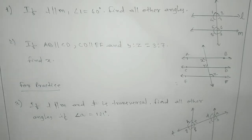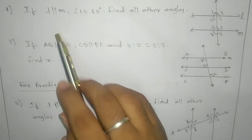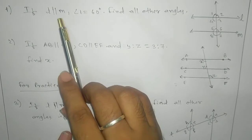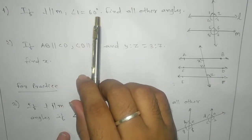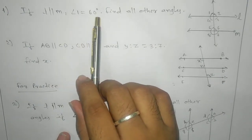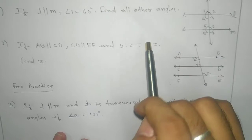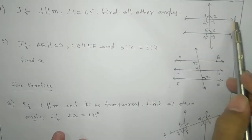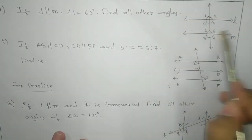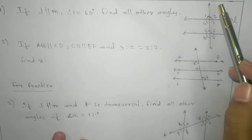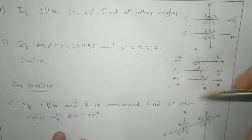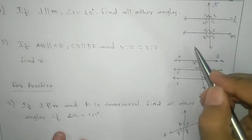Namaste students. Today we are going to see a problem based on parallel lines. Here we have L parallel to M, with angle 1 equal to 60 degrees. We need to find all other angles. The diagram shows L parallel to M, and T is your transversal.